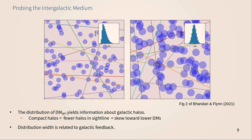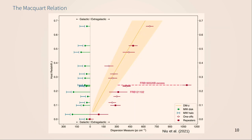In addition to the mean dispersion measure, the distribution of dispersion measures we see can say something more about galactic feedback. If we have galaxies with a lot of star formation, we'll have lots of supernovae injecting energy into the intergalactic medium, plus active galactic nuclei throwing momentum into the IGM. This feedback slows the cooling process that allows IGM gas to collapse into galaxies and affects how compact the galaxy halos are. If we look at a bunch of FRBs and measure the IGM dispersion measures, a distribution skewed to one side implies the halos are more compact, while a less skewed distribution implies otherwise.